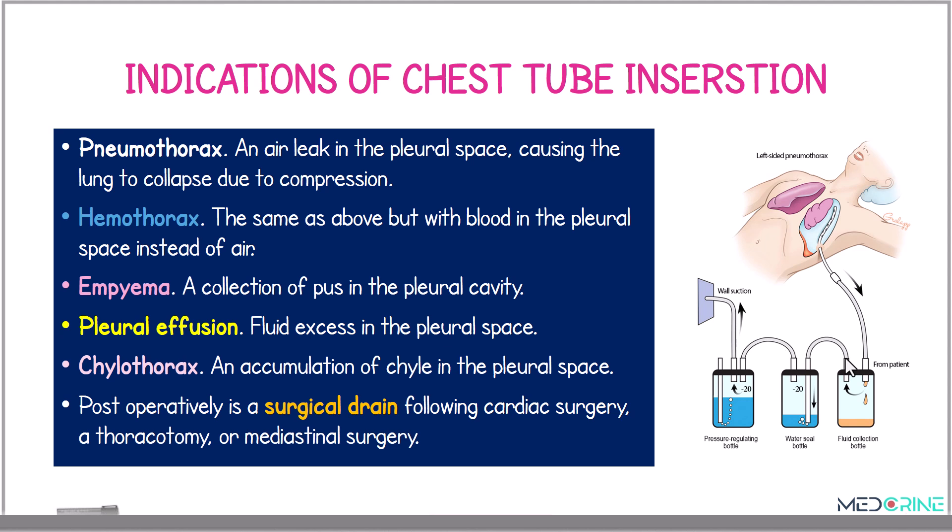Some of the clinical indications for chest tube insertion include pneumothorax, which is an air leak in the pleural space causing the lungs to collapse due to compression. Hemothorax is similar to pneumothorax; however, in this case it is blood that is in the pleural space instead of air.